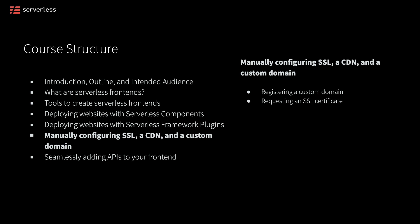Then we'll look at how we could request an SSL certificate to set up HTTPS for our website. After that, we'll look at creating and configuring a CloudFront distribution in order to help deliver files more rapidly to our end users. And finally, we'll look at how we could redeploy our site, and when we need to, invalidate the cache of the CloudFront distribution for all the files inside of our S3 bucket.